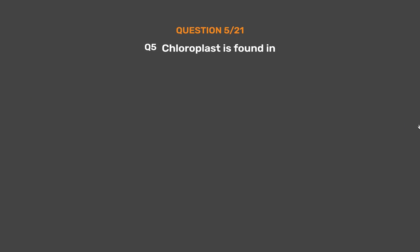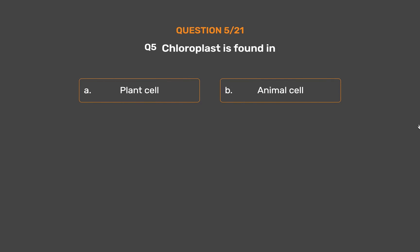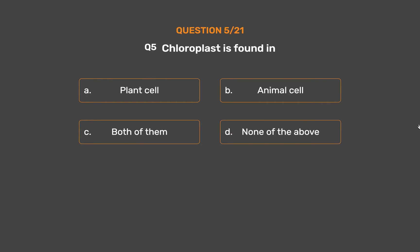Question No. 5: Chloroplast is found in. Option A: Plant cell. Option B: Animal cell. Option C: Both of them. Option D: None of the above.